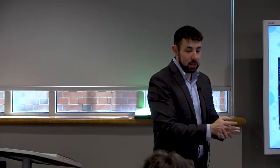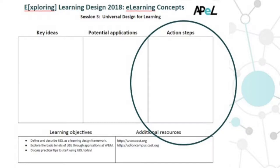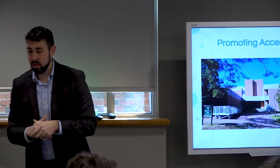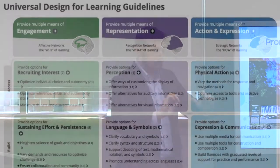Your handout has three columns: key ideas, practical applications, and potential applications for you, along with action steps — we encourage you to write those down as we go. On the back you'll see Universal Design for Learning, the actual standards and steps. Don't get overwhelmed; there's a lot there, but we'll show you how to use it. It's taken right from their website, everything is clickable, and it's color coded. Everything we do with UDL today will follow those color codes: engagement is green, representation is purple, and action and expression is blue.